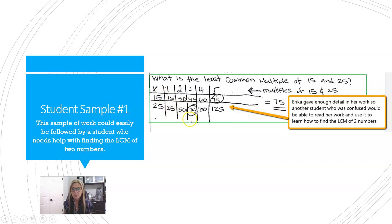She showed us how she made her table or her lists of multiples for 15 and 25, and then she showed us how she circled the first one that was common in both lists.